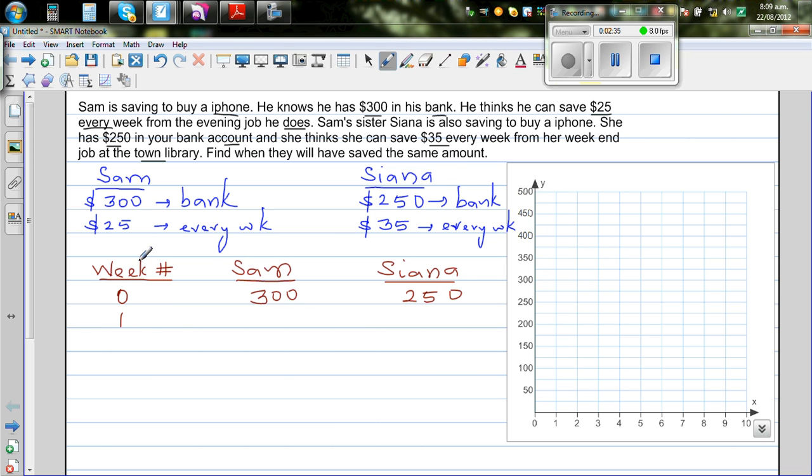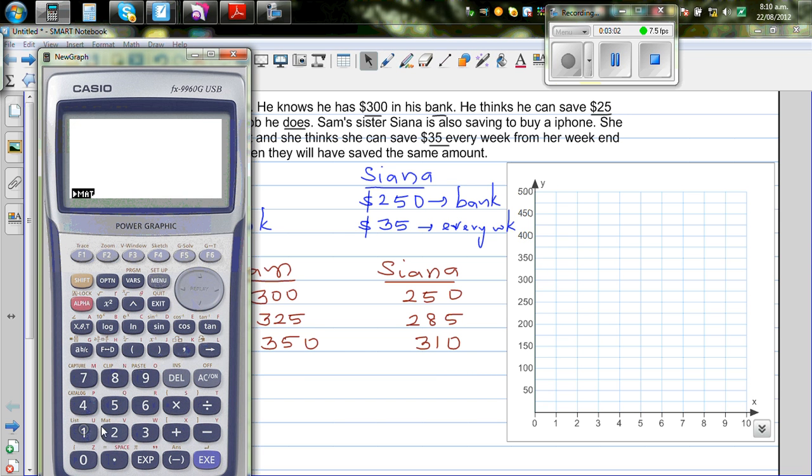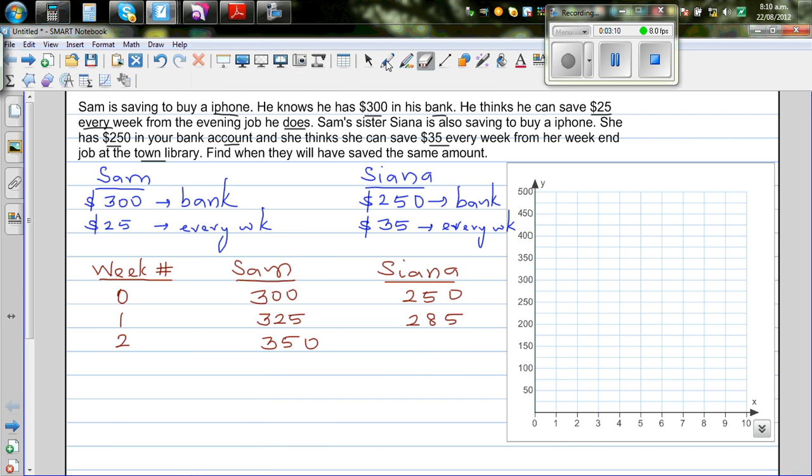After one week, you add $25 to Sam. So that is $325. And you're adding $35, so this is $285. In the second week, you add $25. So this is $350. And if you add $35, this is $320. In the third week, adding $25 gives $375. And adding $35 gives $355.